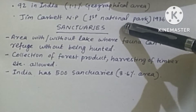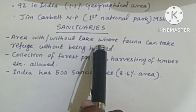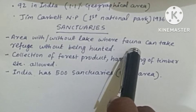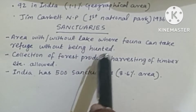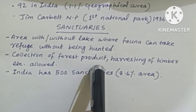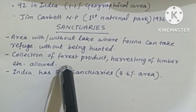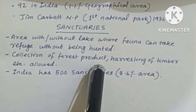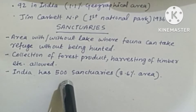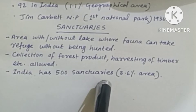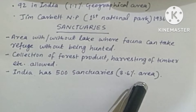Sanctuaries are areas with or without lakes where fauna — that is, wild animals — can take refuge without being hunted. Collection of forest products and harvesting of timber are allowed, and private ownership is also permitted in sanctuaries. India has more than 500 sanctuaries till 2005, occupying 3.6% of the land area.